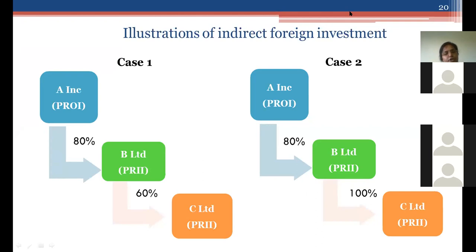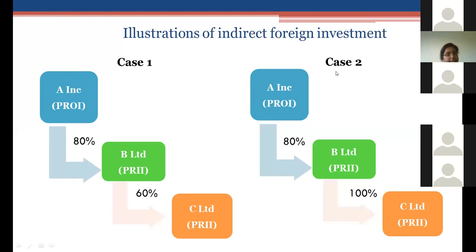We discussed various concepts — sectors and sectoral caps, automatic route, approval route, foreign investment, indirect foreign investment, FDI, and FPI. These form the base for the structure of NDI Rules and the recent amendment discussion.